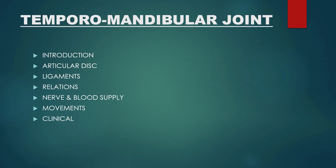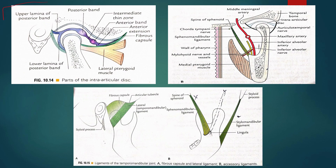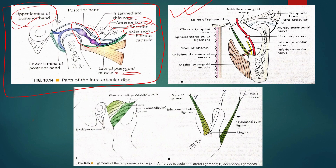Moving ahead, we have the temporomandibular joint, or TMJ. It is one of the most frequently asked long note questions, so please go through this topic carefully. The topics to include are the introductory part, articular disc, ligaments, relations, nerve and blood supply, movements, and lastly the clinical part. For the articular disc, draw a diagram showing the anterior band, anterior extensions, posterior band, and posterior extensions. There is also a diagram for the relations part. Separately in short, ligaments of the TMJ can be asked.